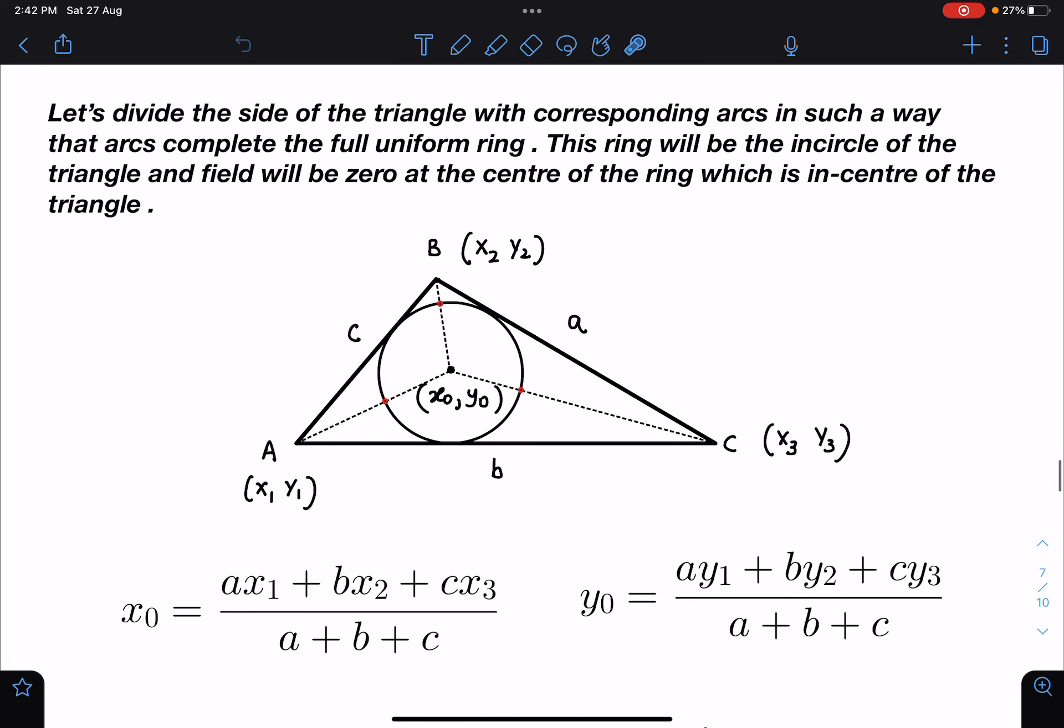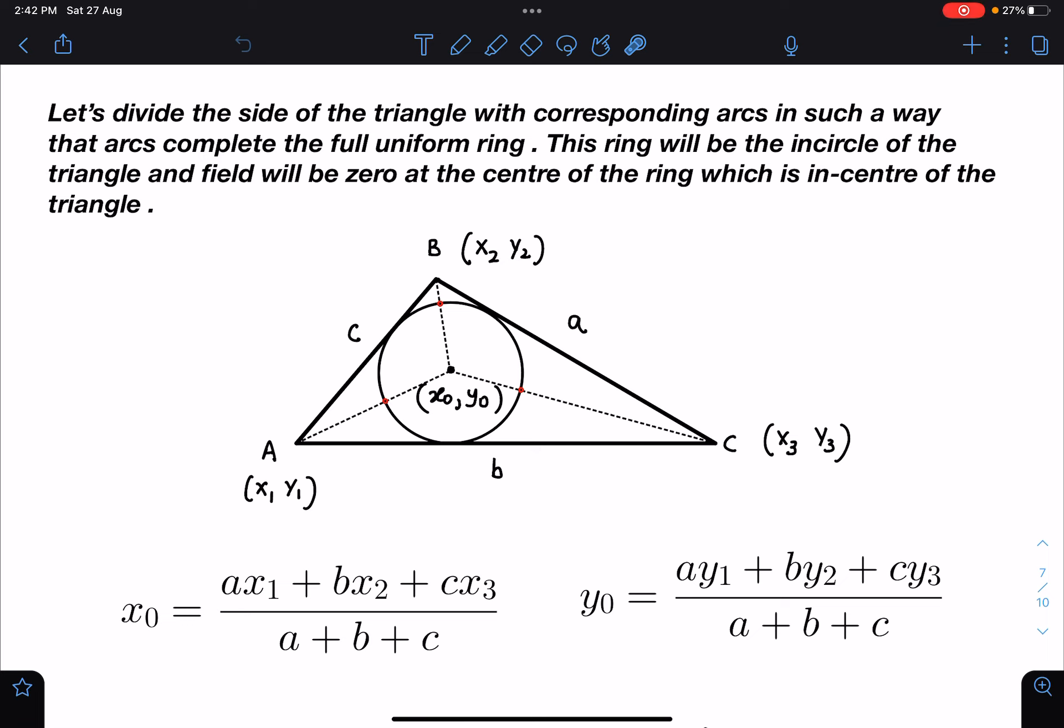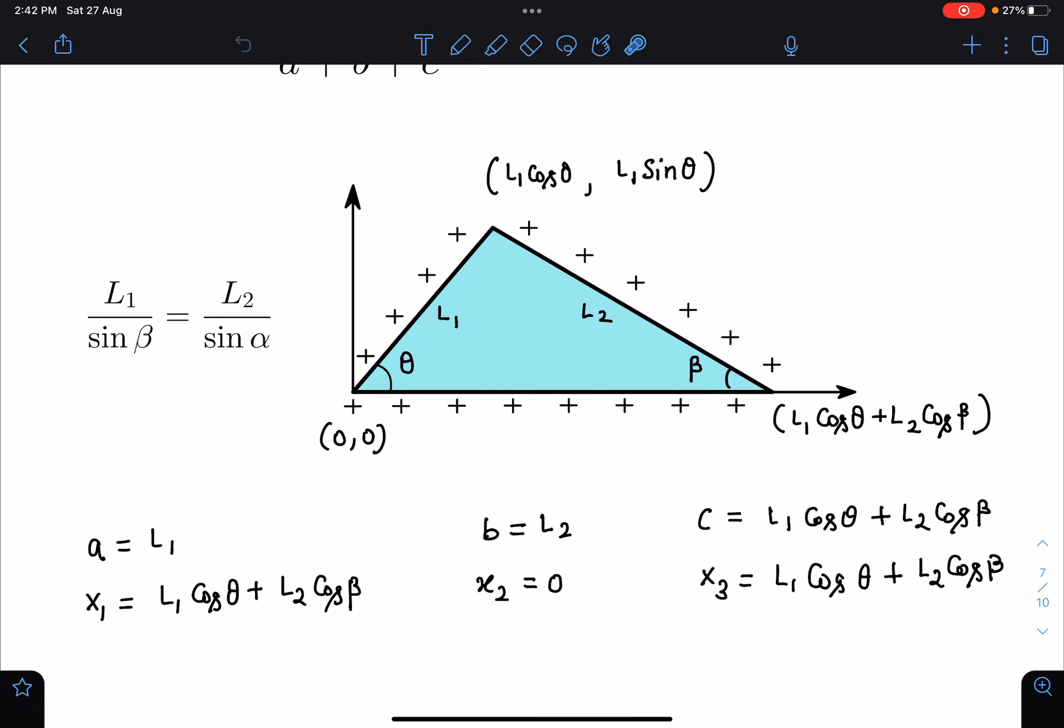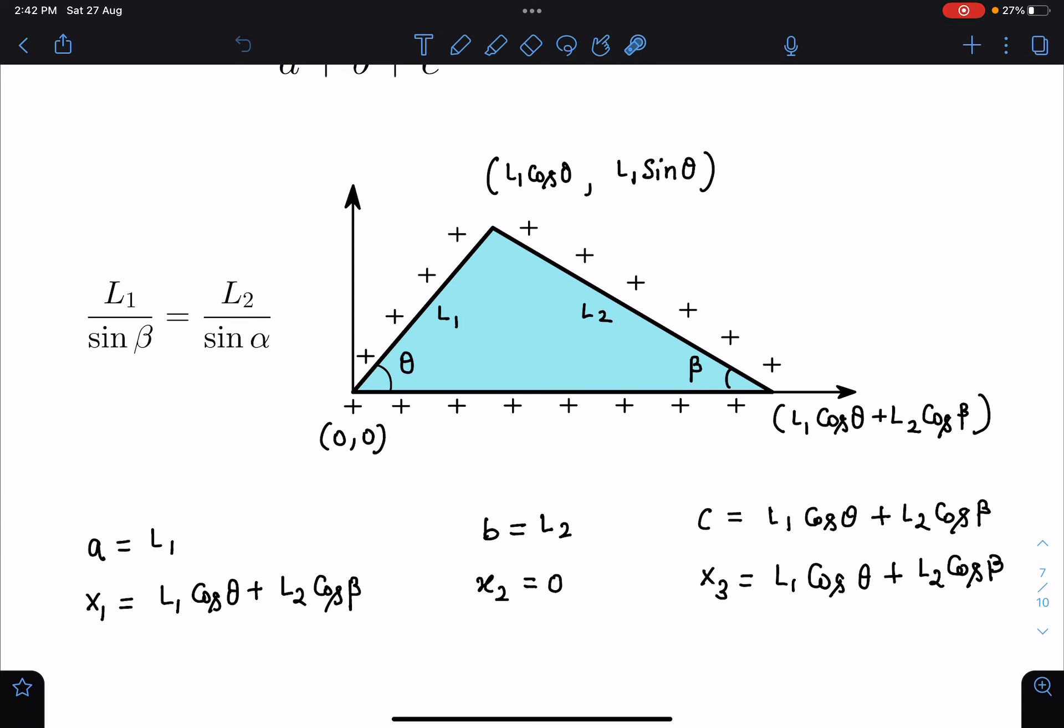So for incenter we already know these formulas. Anyone who is preparing for JEE will have idea of incenter formulas where a, b, c are the side lengths and x1, y1, x2, y2, and x3, y3 are the vertices. So here all these values are known to you. I have just shown, I'm not doing this calculation.